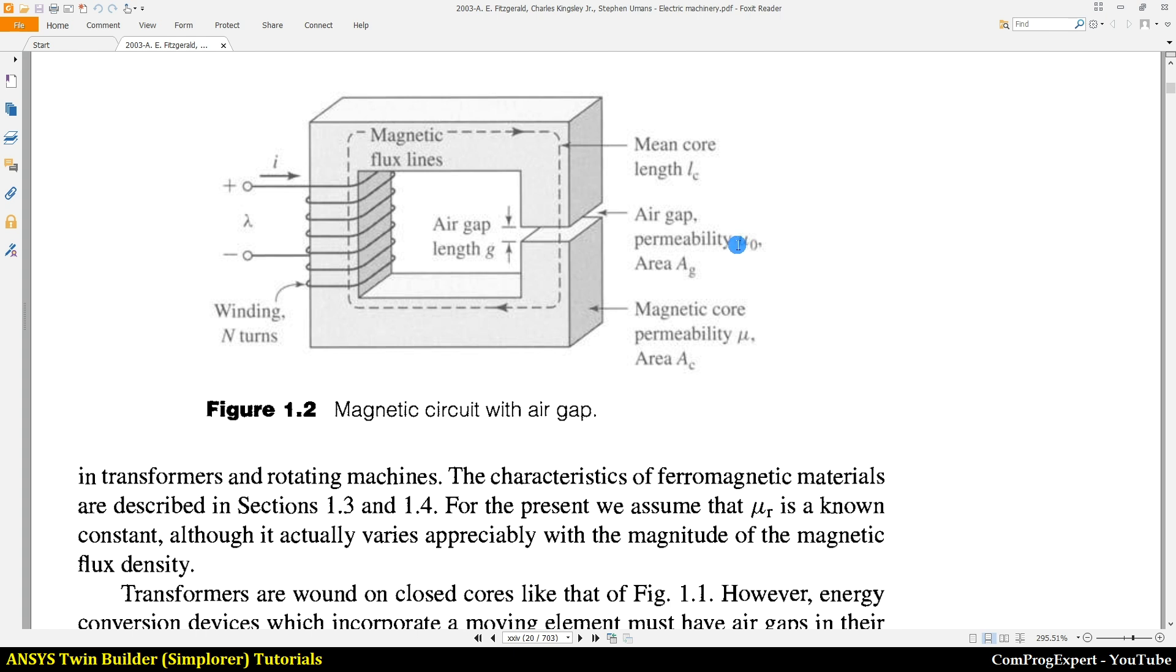And we know that the permeability of air gap is mu zero. This is the permeability of iron, the effective air gap area Ag, the ground section of the core that is Ac, and this is the mean core length.